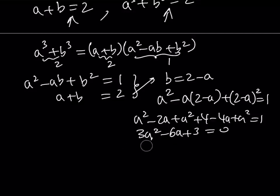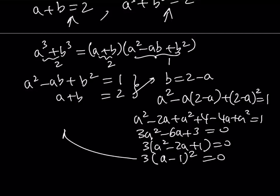or 3 times A minus 1 quantity squared. Because let me explain that step a little bit. So, from here we get 3 times A squared minus 2A plus 1 equals 0. And, as you know, the expression inside the parentheses can be written as A minus 1 quantity squared. So, from here we get that A is equal to 1.